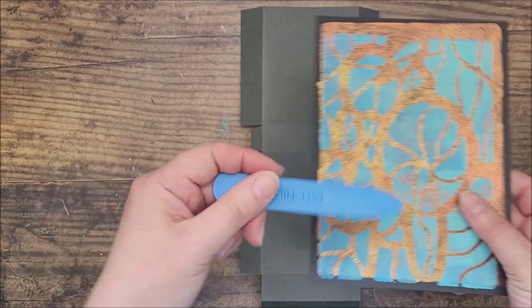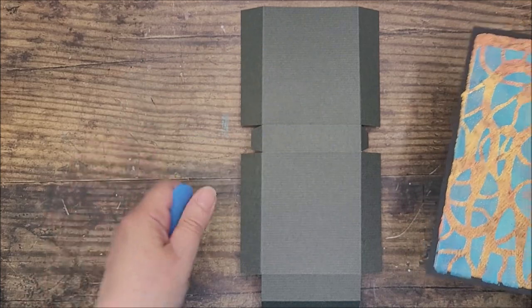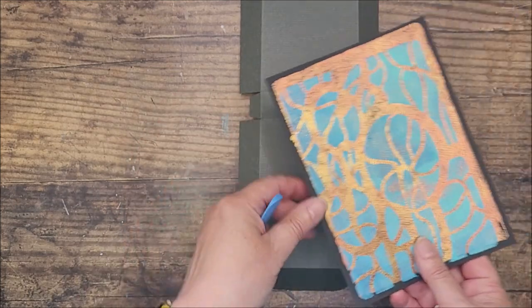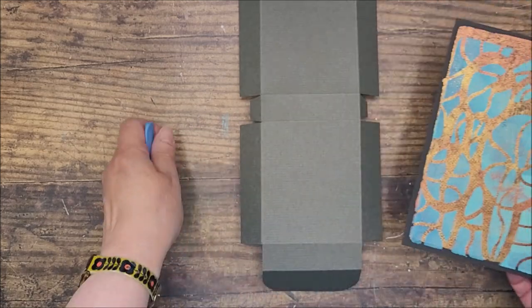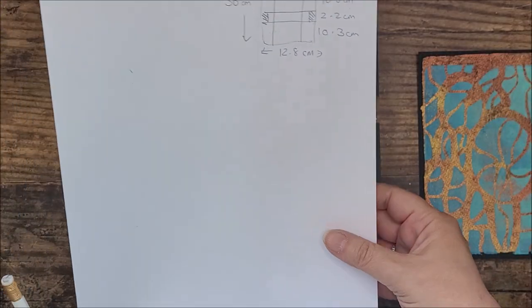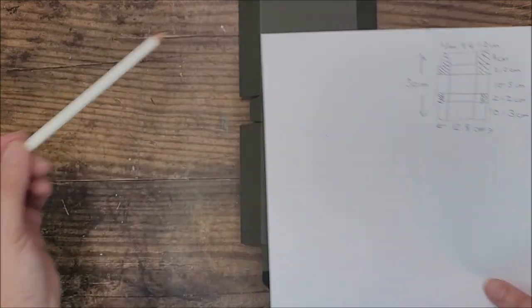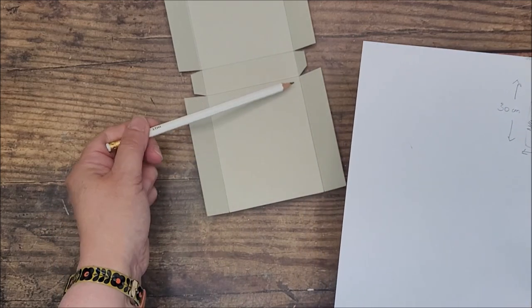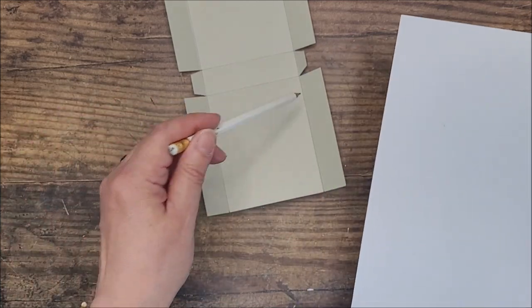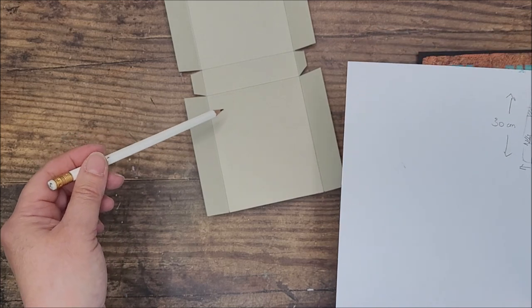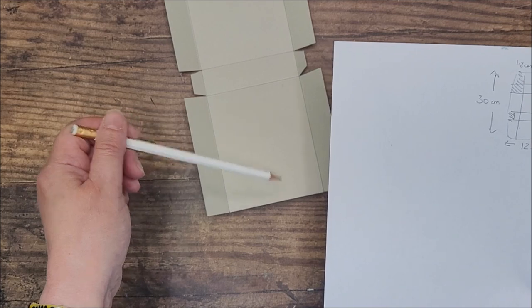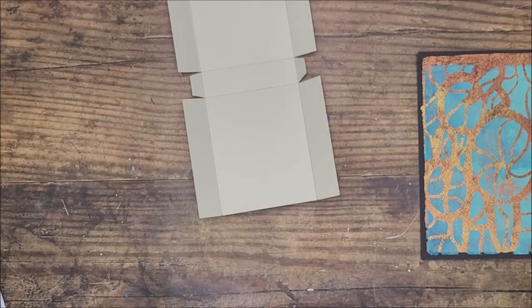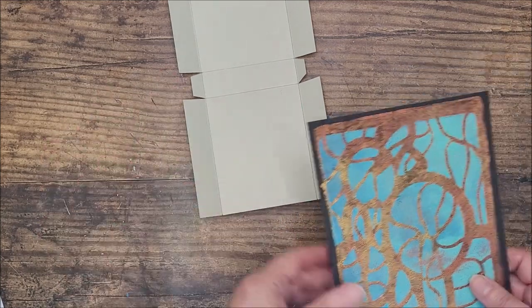What I want to do before I actually assemble it, just because it's going to be easier to do it while it's flat, is put some of these gel prints onto the panels. I want to decorate the front and the back. The main panels are 8.4 centimeters wide by 10.3 centimeters long. I want to cut these decorative pieces a little bit smaller, so I'll make it 8 centimeters by 9.9 centimeters. That'll leave me with a little bit of a border around the edge.